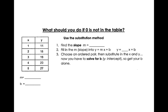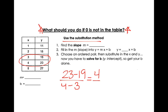Now, here's something that's going to happen to you if you're given a table. What should you do if 0 is not on the table? Okay, you have a few options. Let's take a look at our steps. We have the substitution method. Find the slope m. So I'm going to take two points and find the slope. y2 minus y1 over x2 minus x1. I get 4 over 1 or 4. So I know my slope is 4.